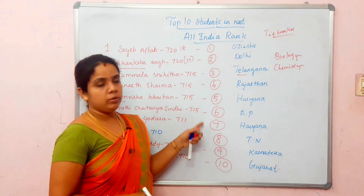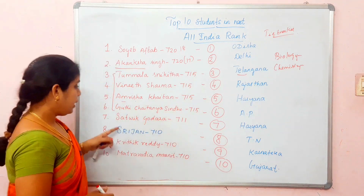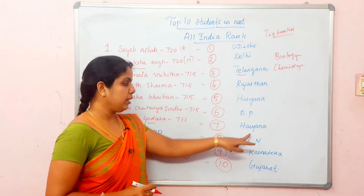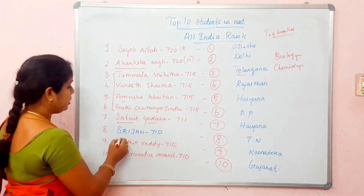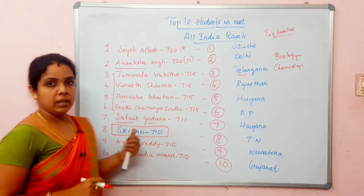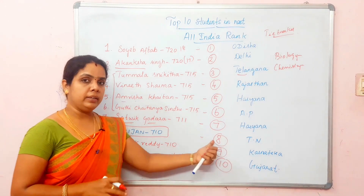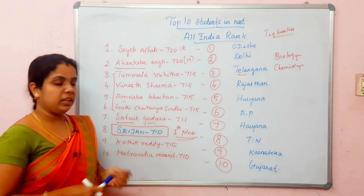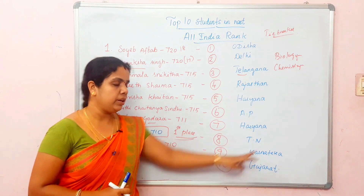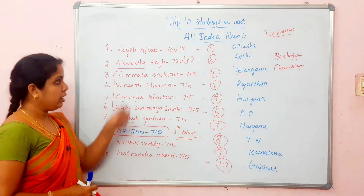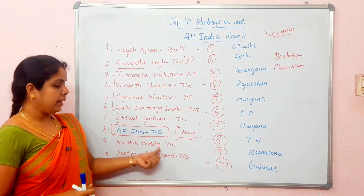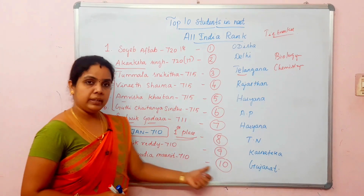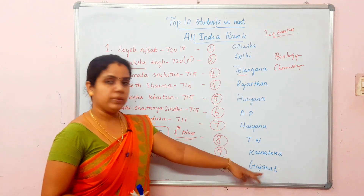So now we have the ranks — third, fourth, fifth, and sixth. Then, Sathvik Godara scored 711 and got 7th rank from Haryana. Then, Strejan — a very important student — is in 8th rank at the All India level and is in 1st place in Tamil Nadu. Strejan scored 710 out of 720 from Tamil Nadu. Congrats to Strejan and all the students! Then, Kritik Ready is in 9th rank from Karnataka. Then, Matravadhyya Manit scored 710 and got 10th rank from Gujarat.